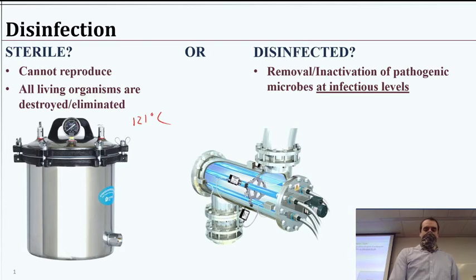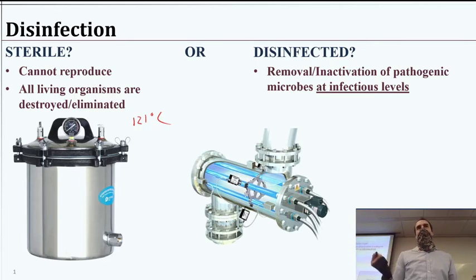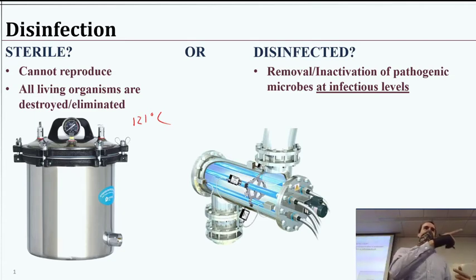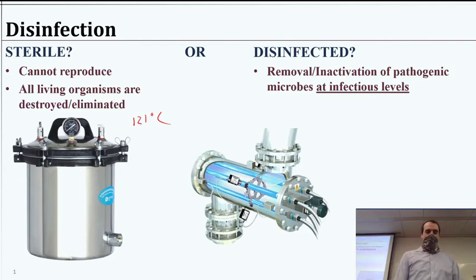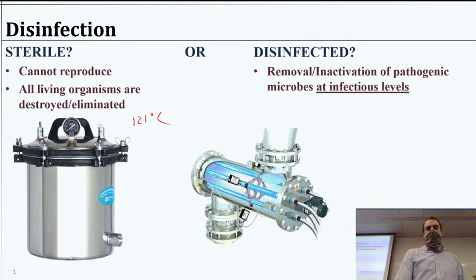In part we don't target sterility because we send our water through a distribution system that's underground, and there's going to be some leakage in places. We try to keep the pressure positive so it's pushing water out and preventing contamination from coming in, but there's still some ability for microbes to eventually get in along those leaks and coat the surfaces in our pipes. So we do expect both bacteria, viruses, algae, and some other stuff to be there in small quantities — it's not that we want it there, but it's just going to happen.